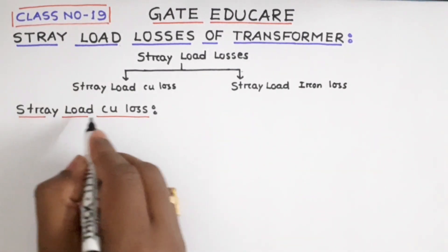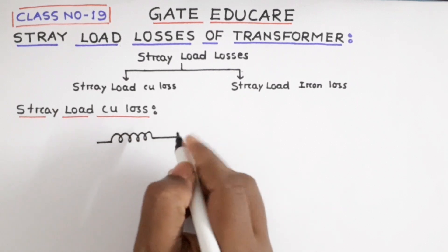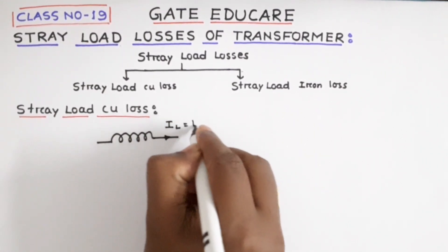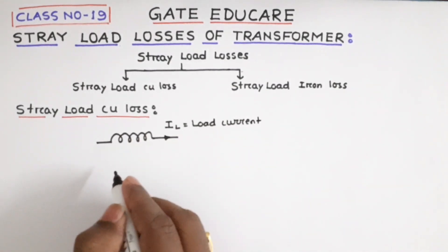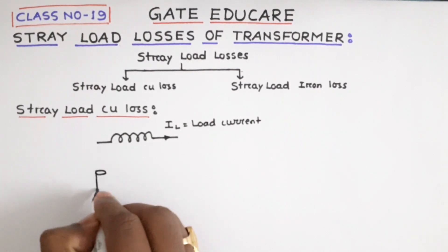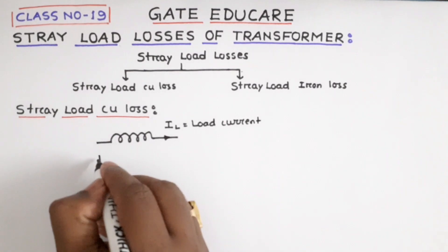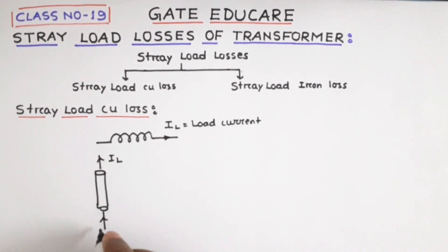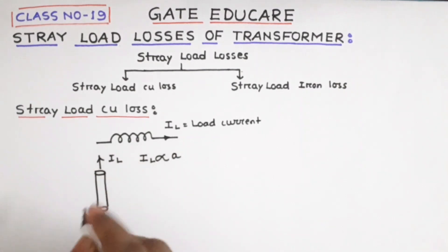First, let us start with stray load copper loss. Suppose this is the coil of the transformer — either primary or secondary — and the current passing through the coil is IL, that is the load current. Now let us consider the coil or conductor is a solid conductor. The current is IL here, and the conductor has a diameter of d.